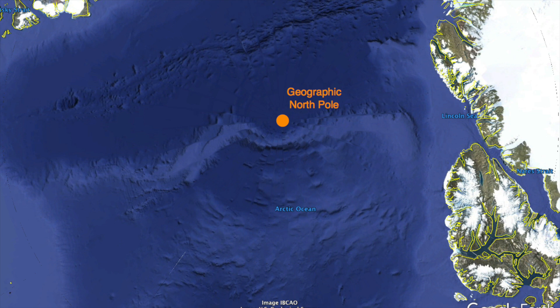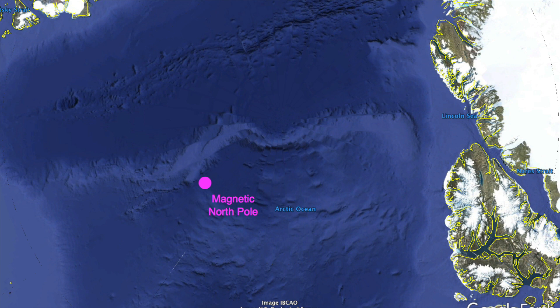The geographic North Pole is the point where the Earth's axis of rotation meets the surface, in the centre of the Arctic Circle. The magnetic North Pole is, as I said earlier, the point a compass is drawn to by the Earth's magnetic field.